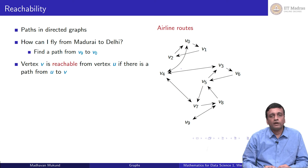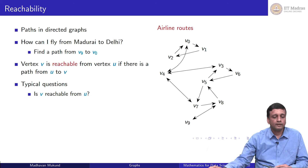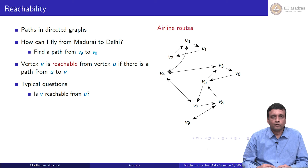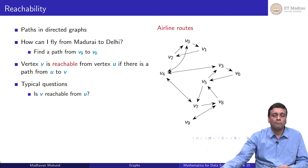In graph theory, we say a vertex is reachable from another vertex if we can find a path. We say V is reachable from U if there is a path from U to V. Some typical questions: is a vertex V reachable from U? This is the kind of question we asked about Madurai and Delhi, or about Priya and Radhika — if Radhika can help, is there a way that Priya can find out through her friends network? This is a reachability question for a specific pair of vertices.